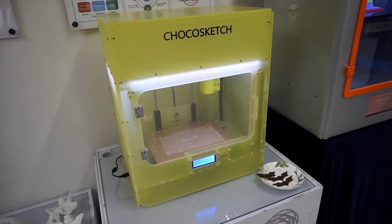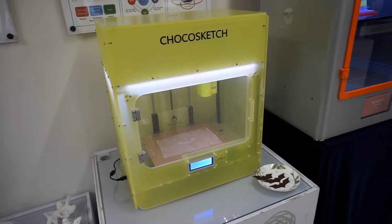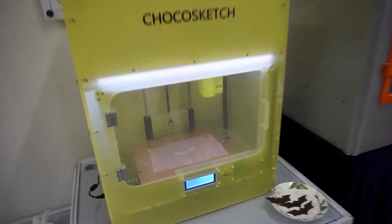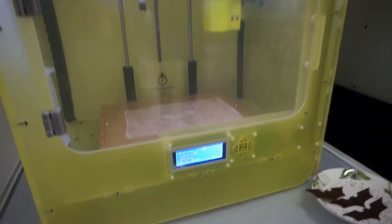The ChocoSketch is the chocolate desktop 3D printer from Rokit. Rokit is a South Korean 3D printing company with printers that range from desktop to professional.